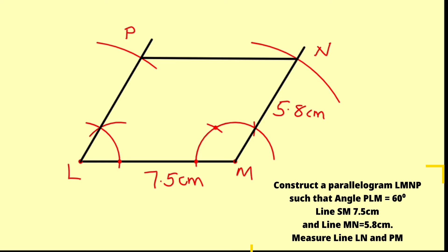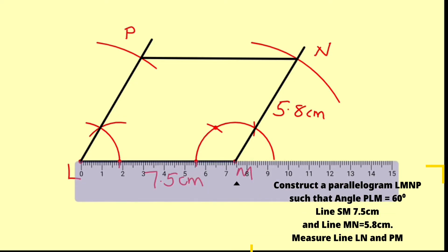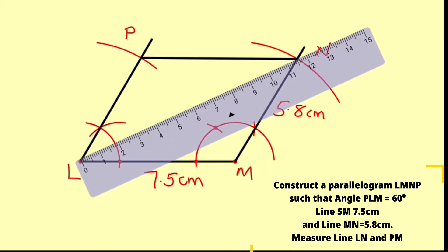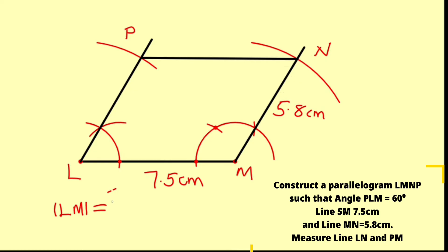Now let us measure the distance from L to N as requested. Using my ruler to measure that diagonal, the distance from L to N is roughly 11.6 centimeters.